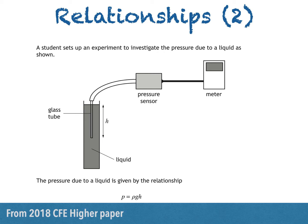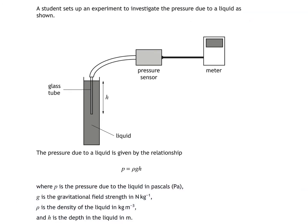A student sets up an experiment to investigate the pressure due to a liquid. The pressure due to a liquid is given by the relationship P is equal to ρgh. This relationship isn't in the relationship sheet, but it used to be when pressure due to a liquid was part of the course. Lowercase p is the pressure due to the liquid in Pascals, g is the gravitational field strength in newtons per kilogram, ρ — that's a letter in the Greek alphabet — is the density of the liquid in kilograms per cubic metre, and h is the depth in the liquid in metres.